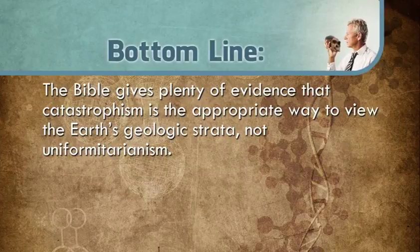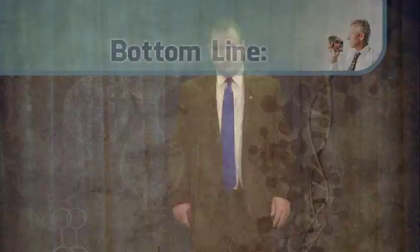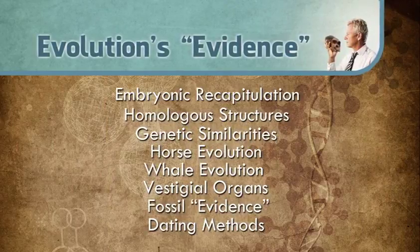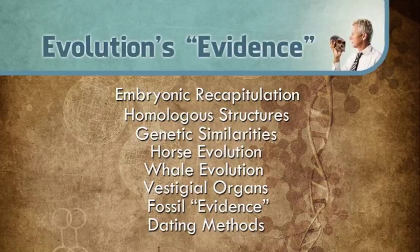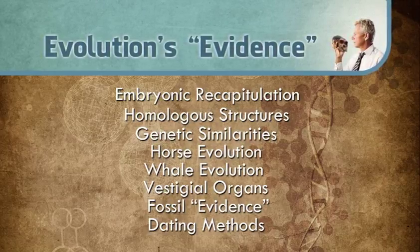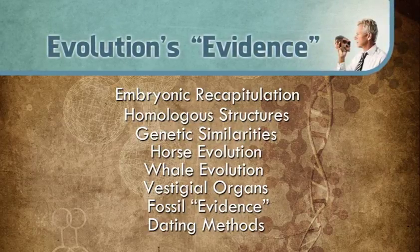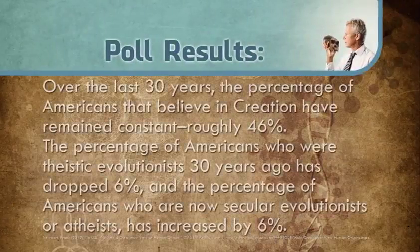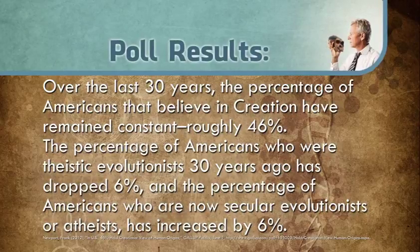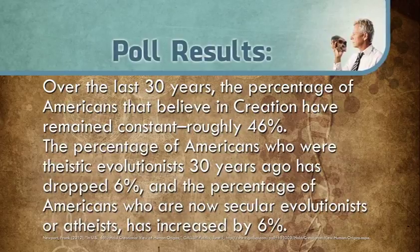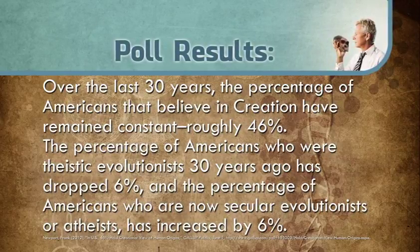The Bible gives plenty of evidence that catastrophism is the appropriate way to view the earth's geologic strata, not uniformitarianism. The Bible believer should have no fear that the scientific evidence will somehow contradict the Bible's teaching. Evolution contradicts the Bible's teaching, but not the scientific evidence. Remember our list of alleged evidences for evolution — all that supposed evidence comprising pages and pages of biology and geology textbooks being thrust upon the minds of young people, causing many to lose faith in the Bible and totally lose faith in God, accepting atheism instead. A recent Gallup poll illustrated that very point. Over the last thirty years, the percentage of Americans that believe in creation has remained constant at roughly 46%, but the percentage of Americans who were theistic evolutionists has dropped 6%, and the percentage who are now secular evolutionists or atheists has increased by the same amount — 6%.